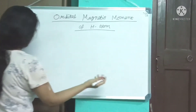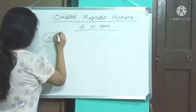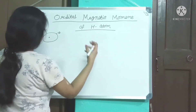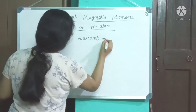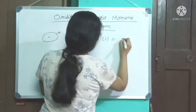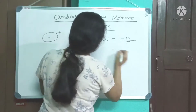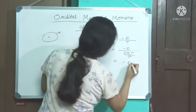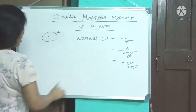We may roughly consider an atom as an electron of charge minus e circulating the nucleus with a speed V. This is equivalent to a circular current loop where the current I equals the charge divided by the period T. So current I equals minus e by T, where T equals 2πr/V, giving us I equals minus eV by 2πr.